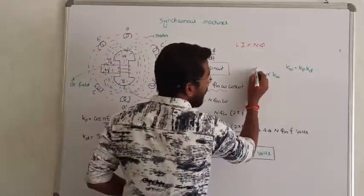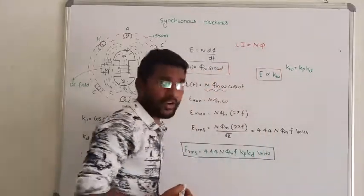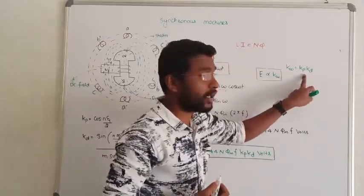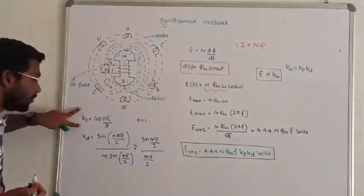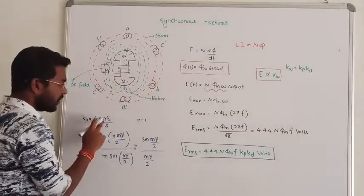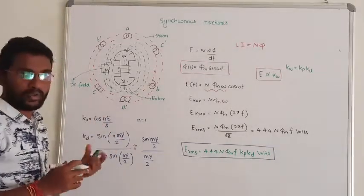Since the induced EMF is directly proportional to the winding factor, which is the product of pitch factor and distribution factor, the RMS voltage uses the pitch factor formula: cosine of epsilon by 2, where epsilon denotes the short chord angle.